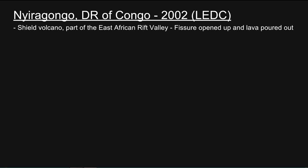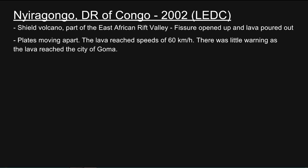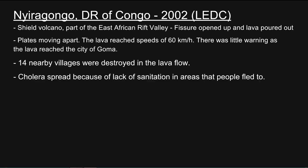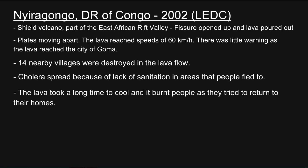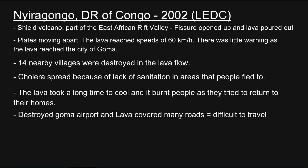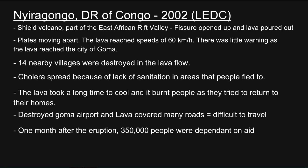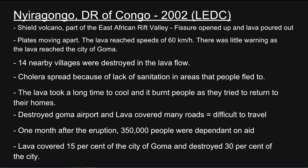Nyiragongo in Democratic Republic of Congo. It was a shield volcano part of the East African Rift Valley. A fissure opened up and poured lava out; the plates were moving apart. The lava reached speeds of 60 km an hour; there was little warning as lava reached the city of Goma. 14 nearby villages were destroyed in the lava flow. Cholera spread because of lack of sanitation in areas that people fled to. The lava took a long time to cool and burnt people as they tried to return to their homes. It destroyed Goma Airport and lava covered many roads, making it difficult to travel. One month after the eruption, 350,000 people were dependent on aid. Lava covered 15% of the city of Goma and destroyed 30% of the city.